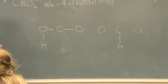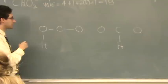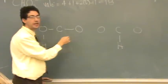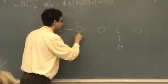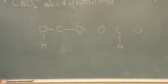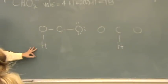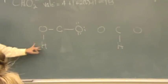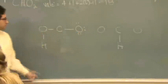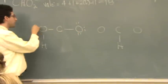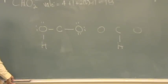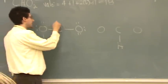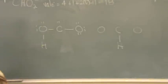Now I'm going to start filling out my terminal atoms with lone pairs — counting up to twelve. Hydrogen doesn't have any lone pair electrons. Then filling the oxygens: two, four, six, eight, ten, twelve, fourteen, sixteen — and then eighteen on the other oxygen. Oxygens are nice to do first.